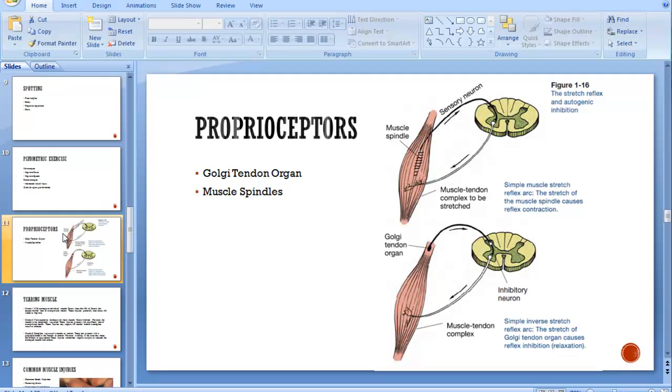Proprioceptors. The Golgi tendon organ: if the muscle gets stretched too much, it's a safety mechanism inside the tendon that if the muscle stretches out too much, it tells the muscle to relax so you don't pull the muscle away from where it's attached. It's used in types of stretching. If you've ever heard of proprioceptive neuromuscular facilitation, that's a type of stretching that activates the Golgi tendon organ.